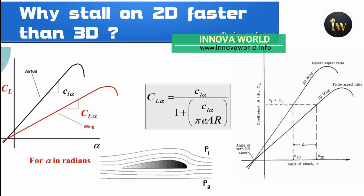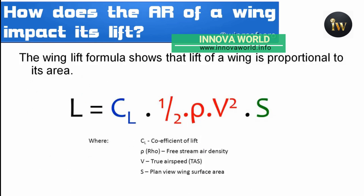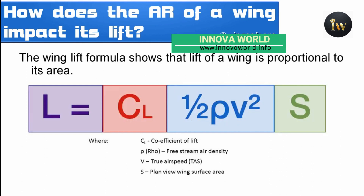Regarding how aspect ratio impacts lift, the wing lift formula shows that lift is proportional to wing area: L = CL × ½ρV²S, where CL is the coefficient of lift, ρ is the free stream air density, V is the true airspeed, and S is the plan view wing surface area.